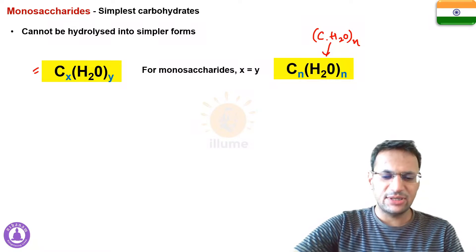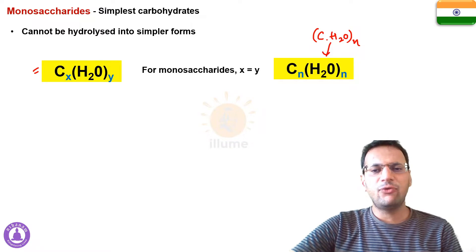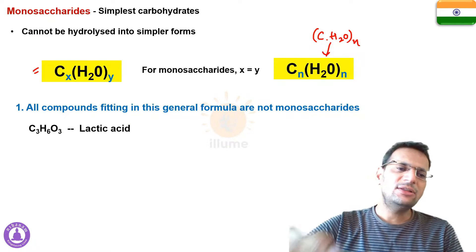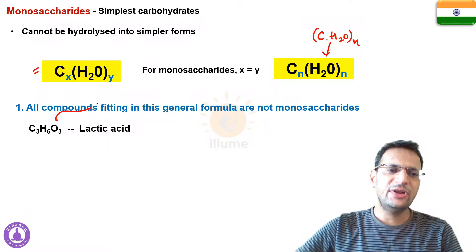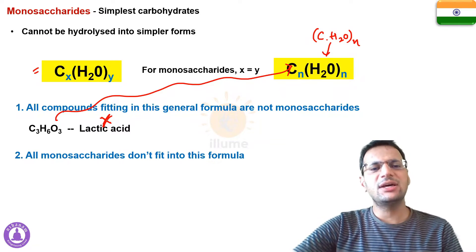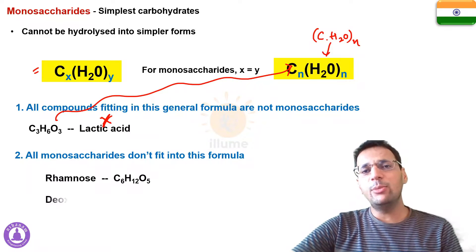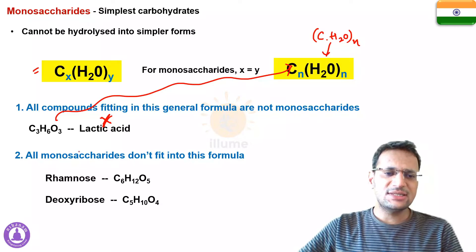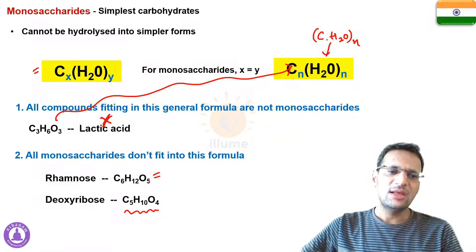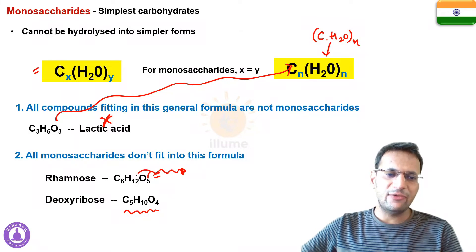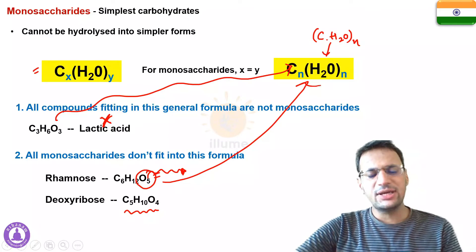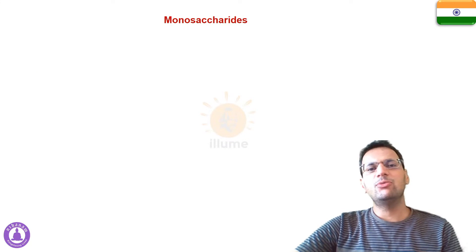Not every compound that follows this formula is a monosaccharide. For example, lactic acid has the formula C₃H₆O₃, which fits the general formula, but lactic acid is not a monosaccharide. Also, not all monosaccharides fit into this formula — for example, rhamnose is C₆H₁₂O₅ and deoxyribose is C₅H₁₀O₄. Rhamnose doesn't fit because it has O₅ instead of O₆.